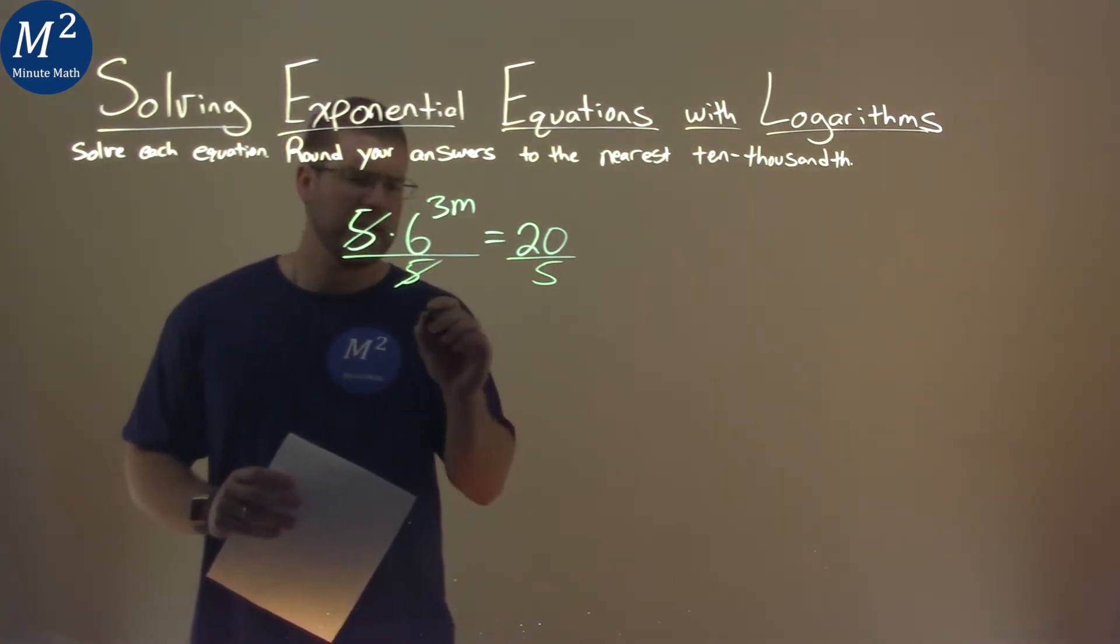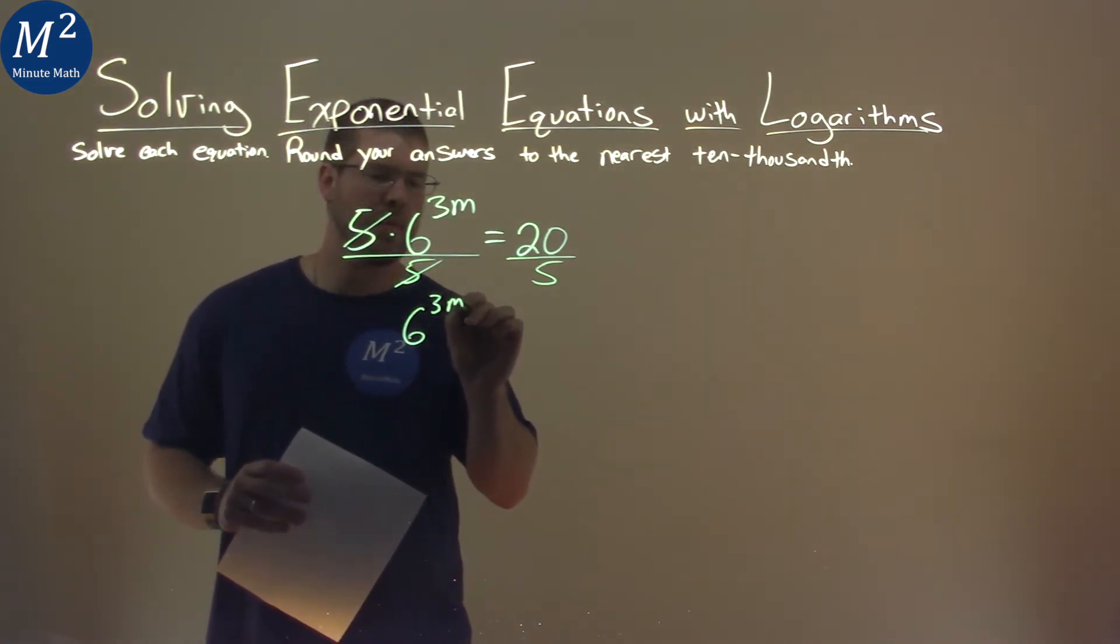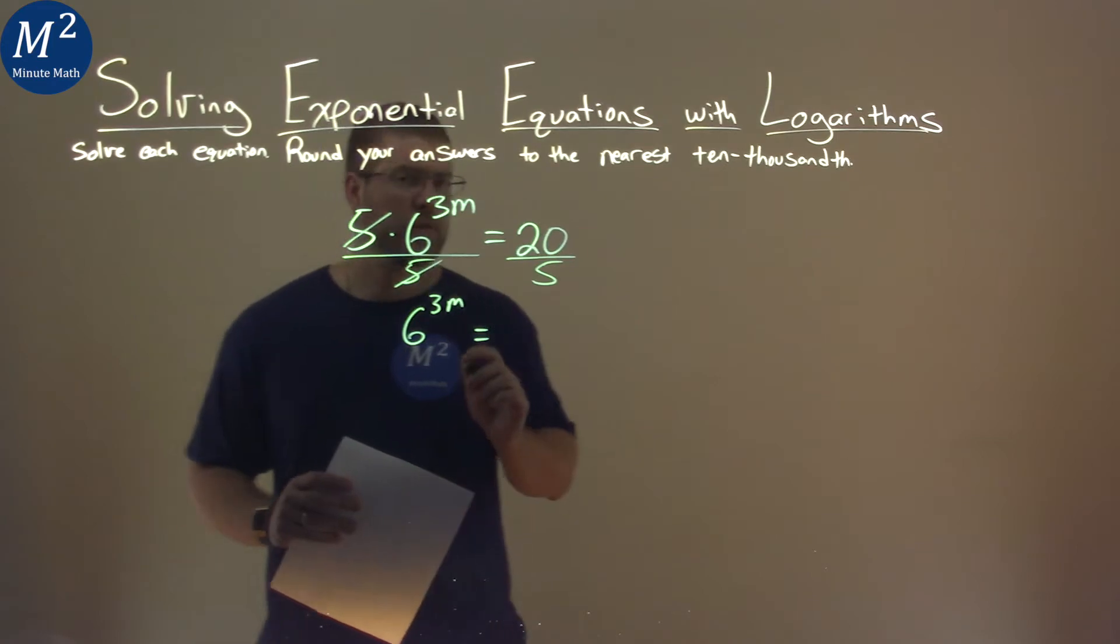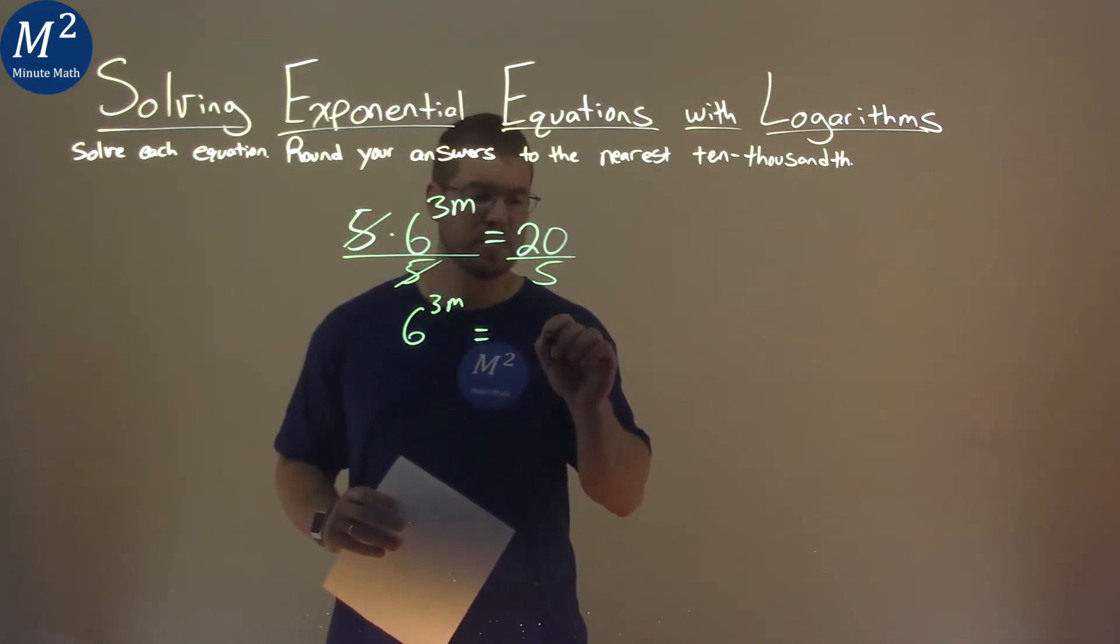5's cancel on the left, giving us 6 to the 3m power. That's equal to 20 divided by 5, which is 4.